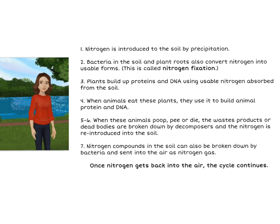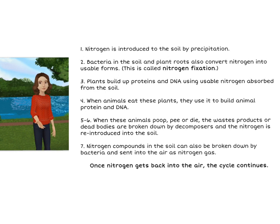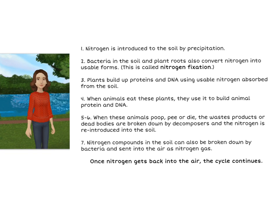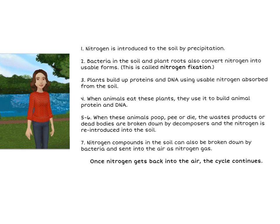Three, plants build up proteins and DNA using usable nitrogen absorbed from the soil. Four, when animals eat these plants, they use it to build animal protein and DNA.